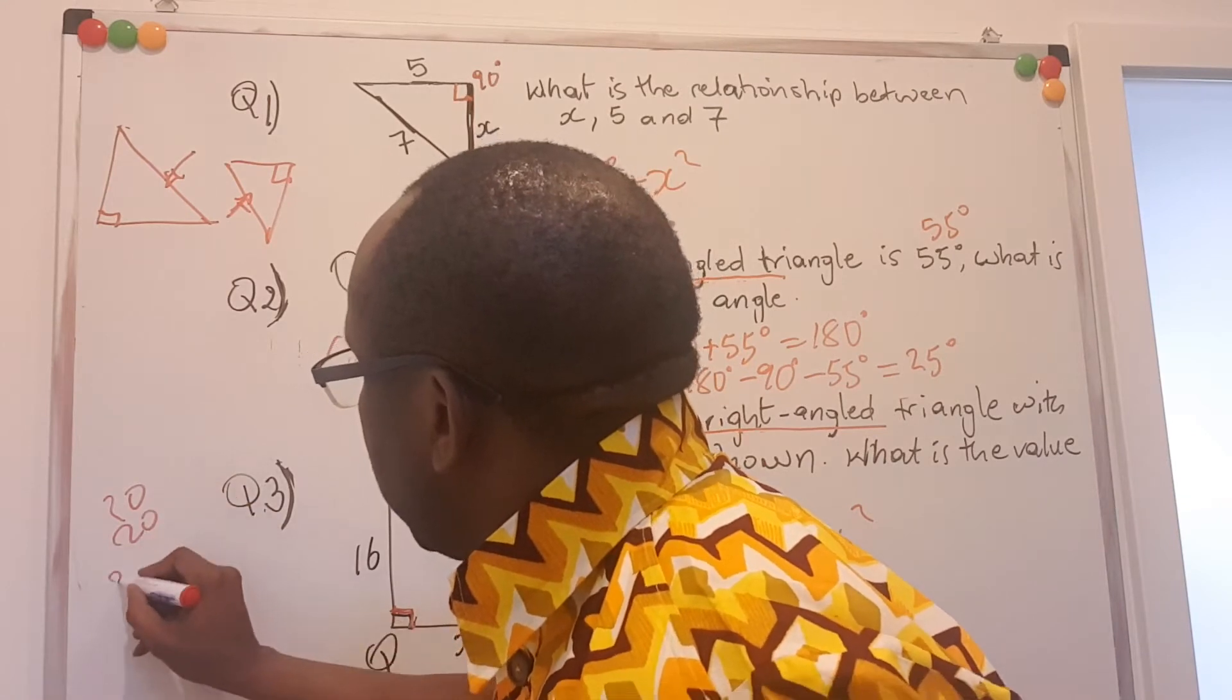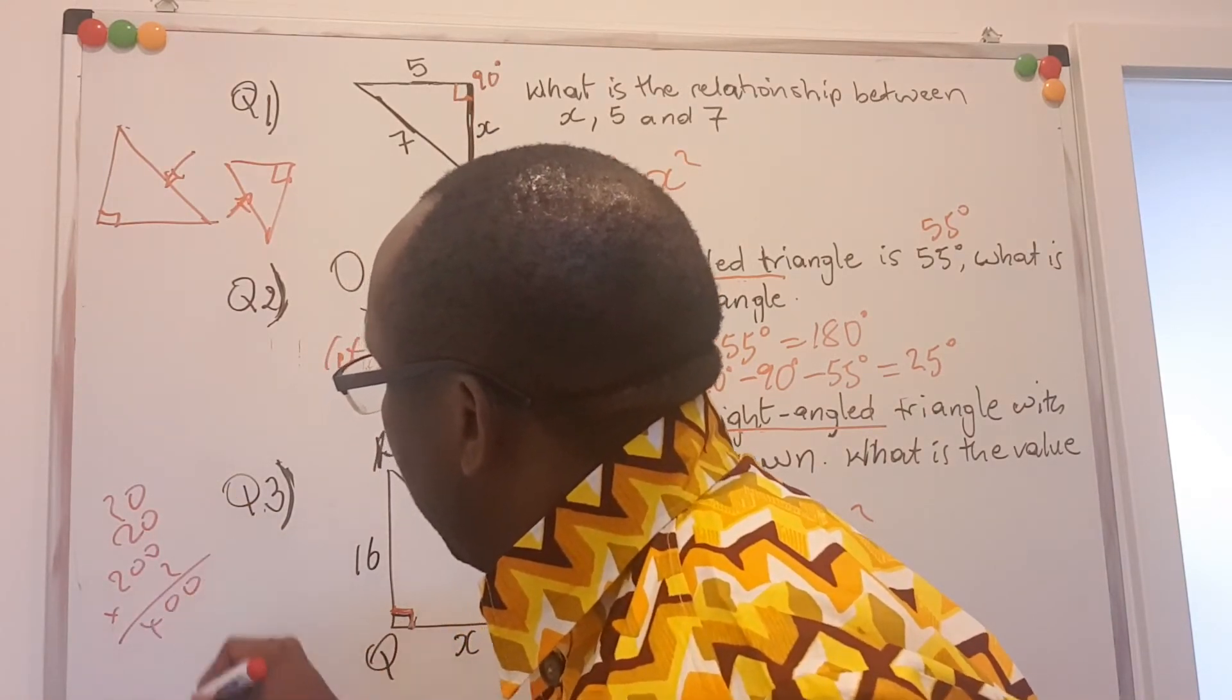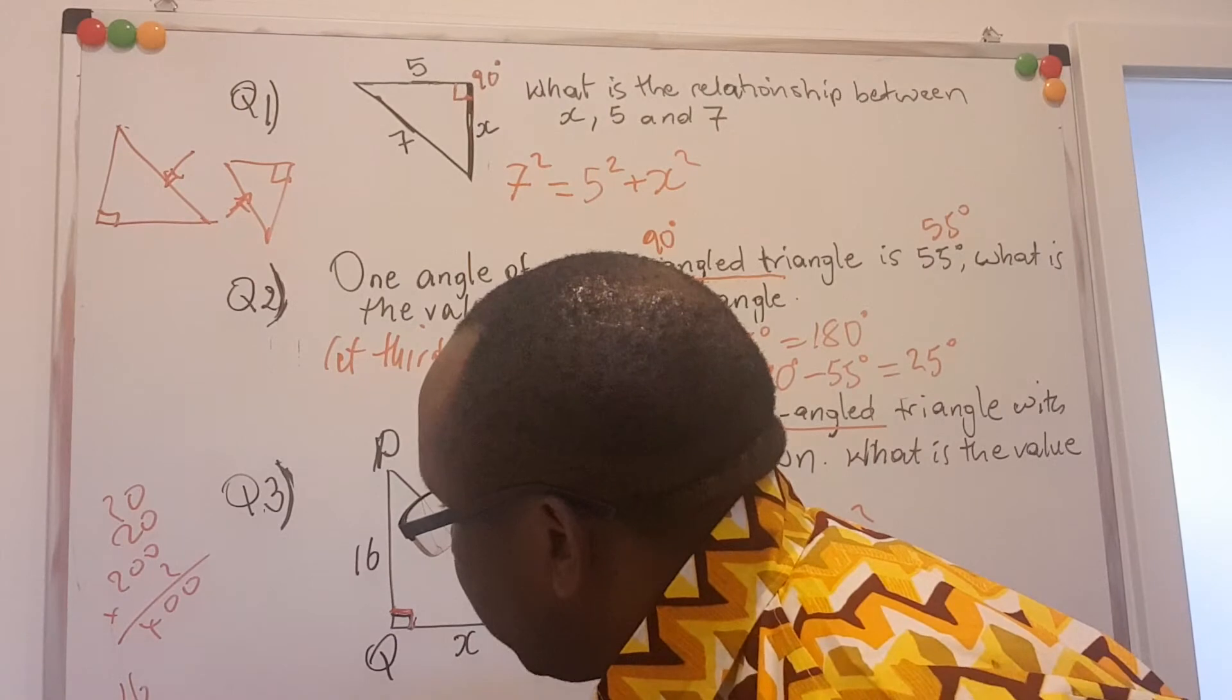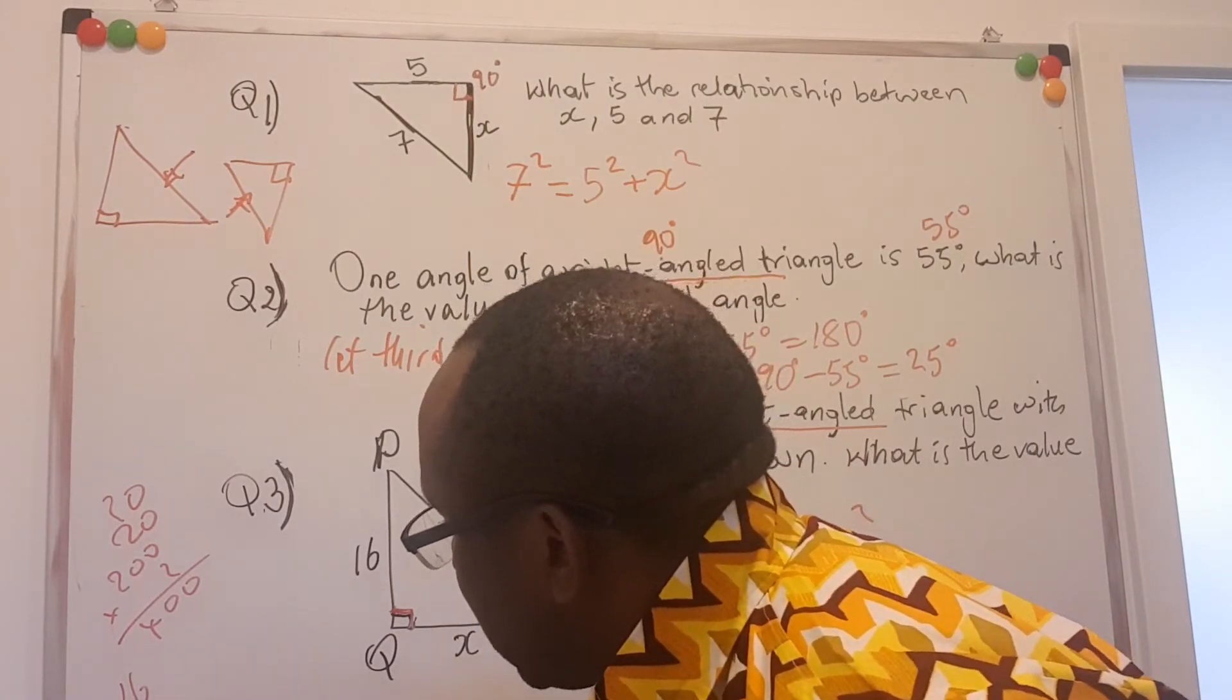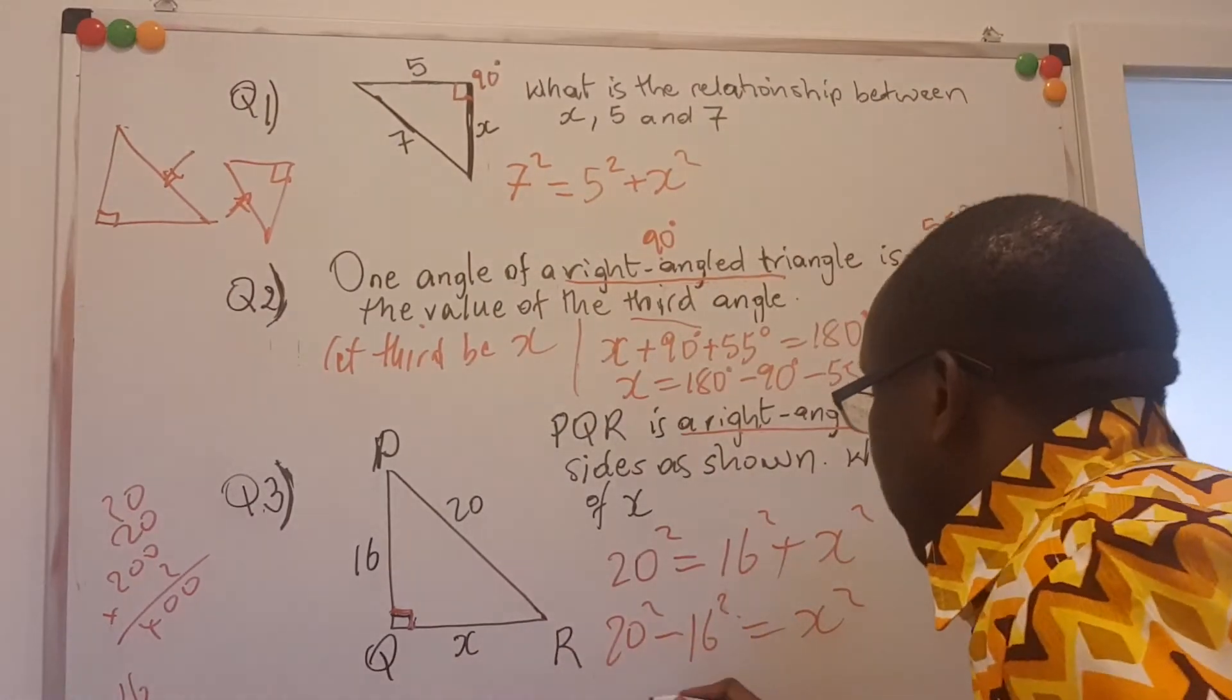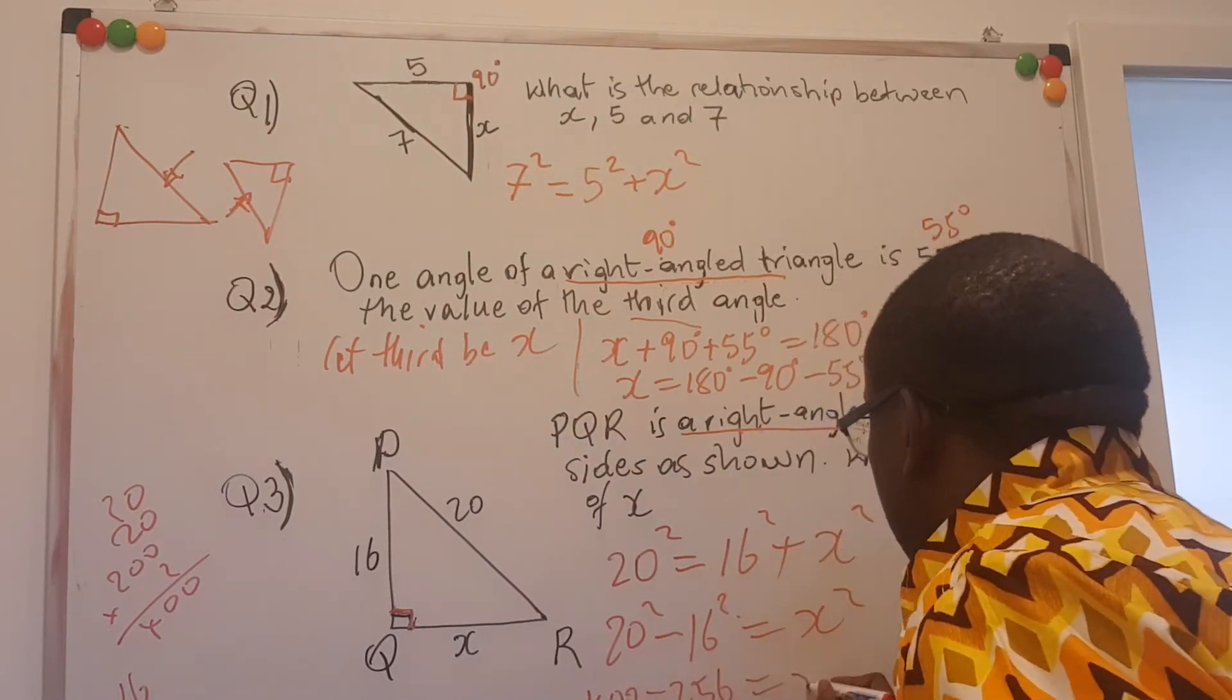20 times 20 is 200 times 2, and that is 400. We need also 16 times 16 there. Then 6 times 6 is 36, 6 times 1 is 6, and the 3 is 9. 1 times that is 6, 1 times 1 is 1. If you sum this, you get 6, you get 5, and you get 2. That's 256.